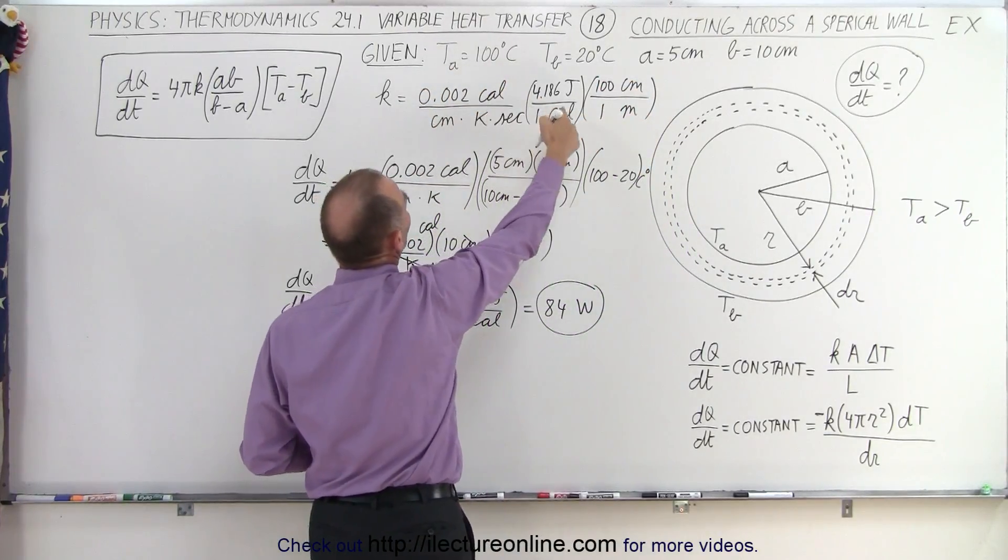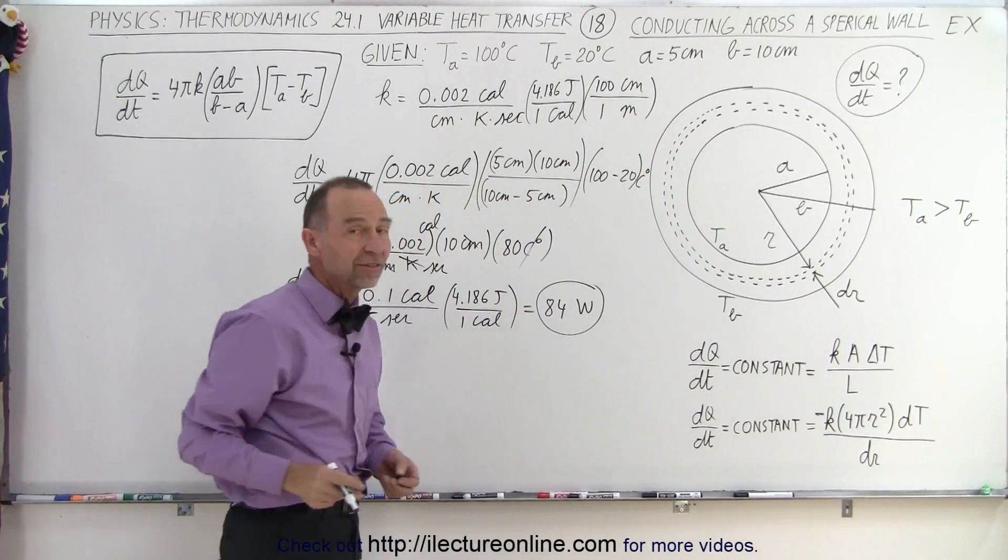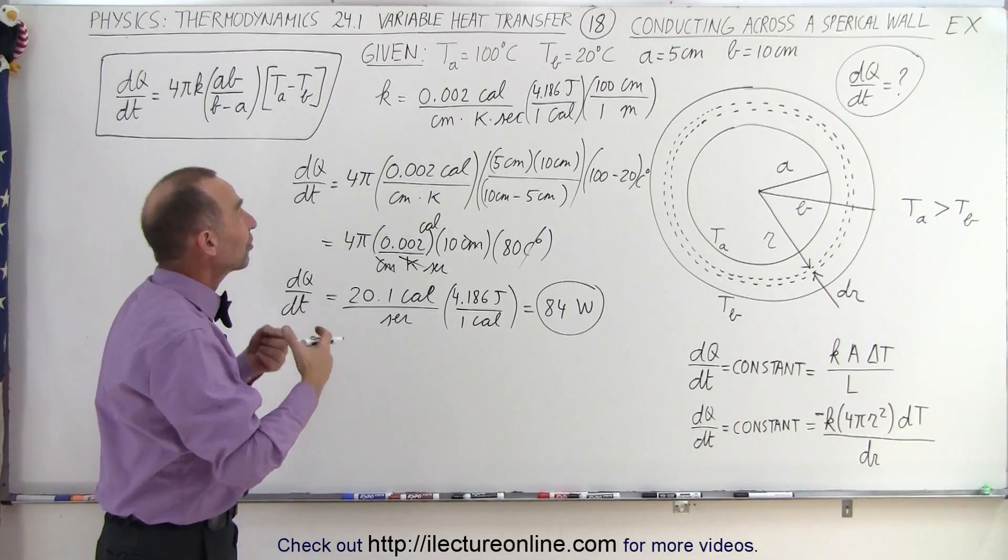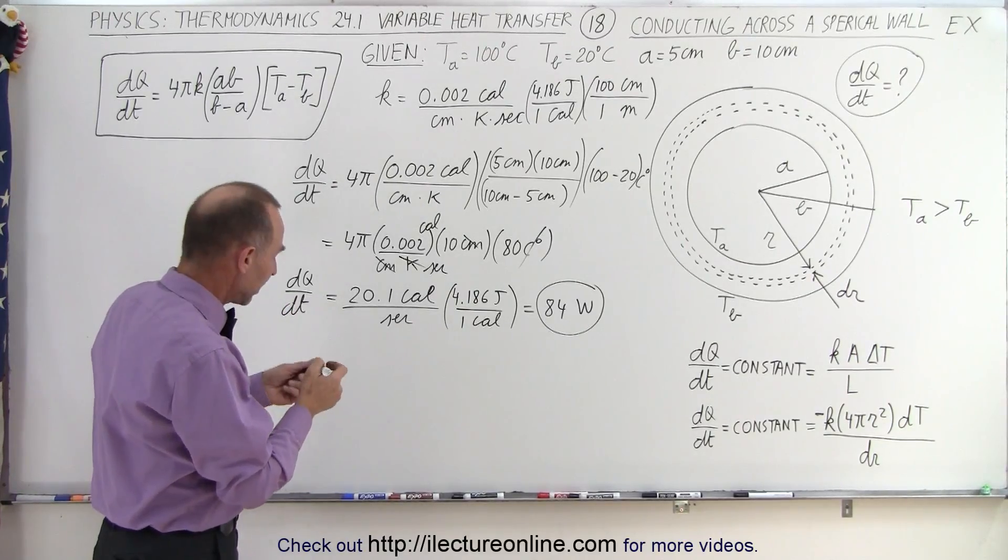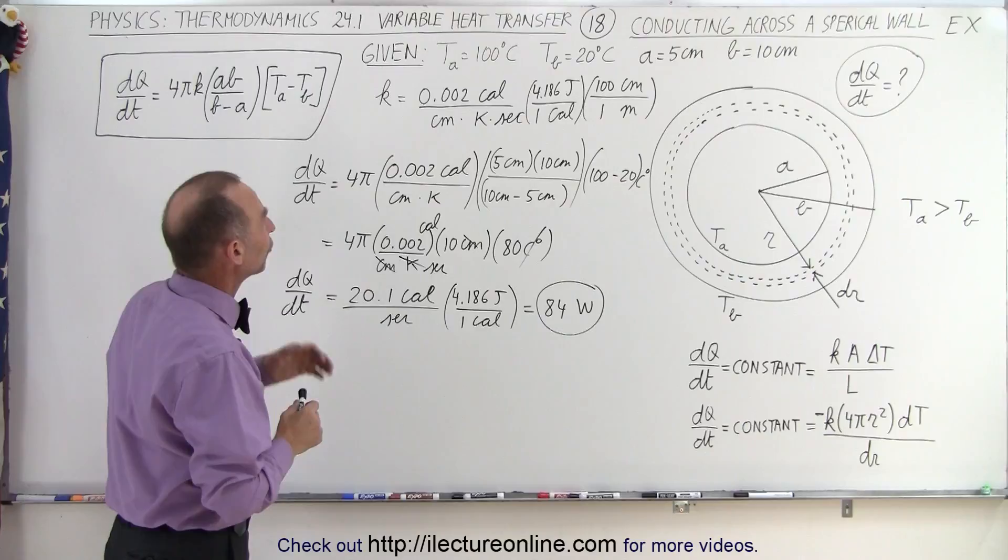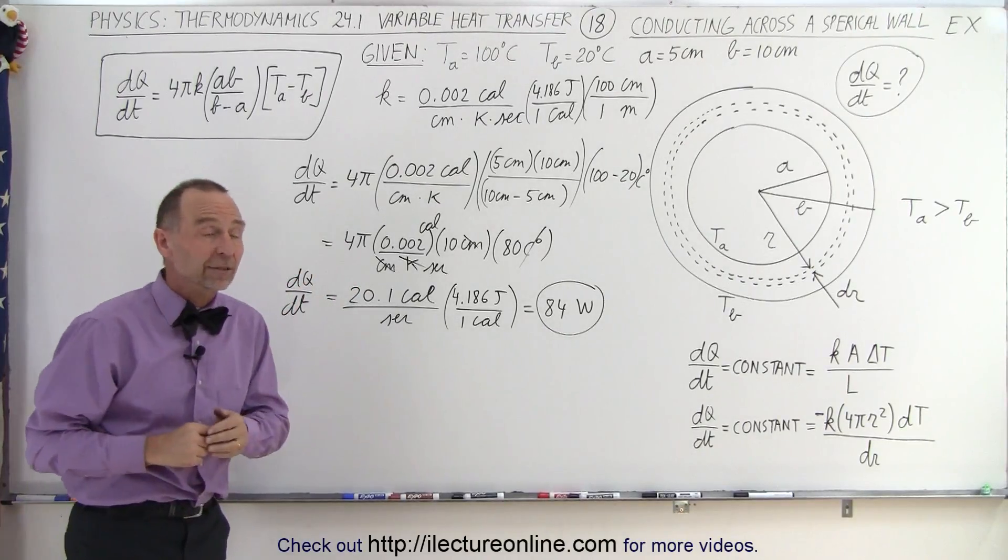So by multiplying this number by 418.6, we can actually convert it to the more standard k, which is the heat conductivity constant, in terms of joules per meter per Kelvin per second.